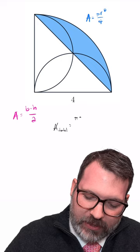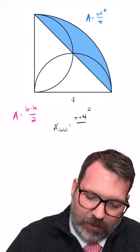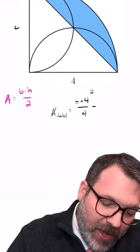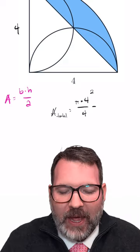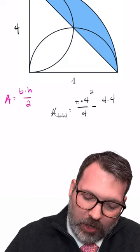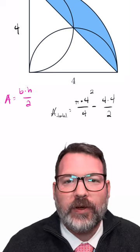We can see our radius is four, so that's going to be pi times four squared divided by four, and this is embedded in a square, so both the base and height of that triangle are also four, four times four divided by two.